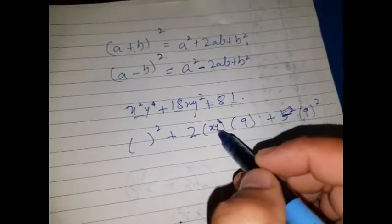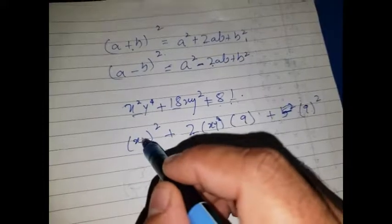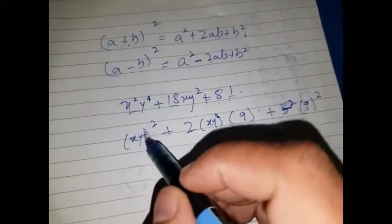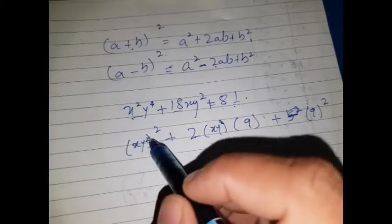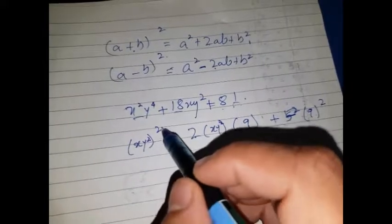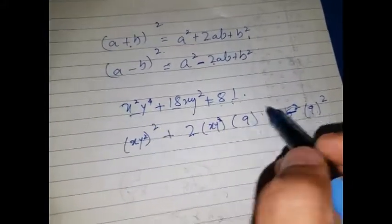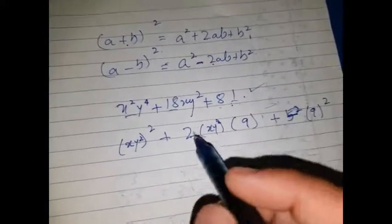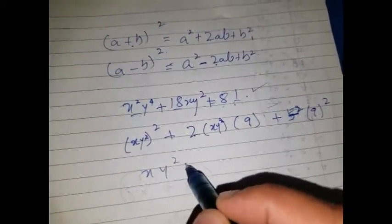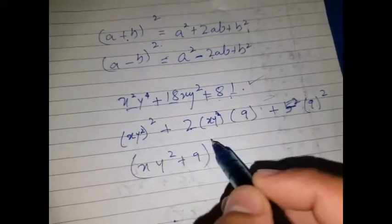So this is my a. I'll put xy². Now if you will notice, I have a² on this side. If I open this one, this will become x²y⁴, so this is actually making up the whole formula. I can write down (xy² + 9)² as my answer.